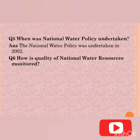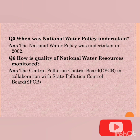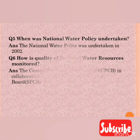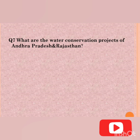Question number six: how is the quality of national water resources monitored? (Hum jal sansaadhan ko kaise monitor kar sakte hain?) The answer is: the Central Pollution Control Board (CPCB) in collaboration with the State Pollution Control Boards (SPCB). Hum CPCB aur SPCB ke dwara isko monitor karte hain.